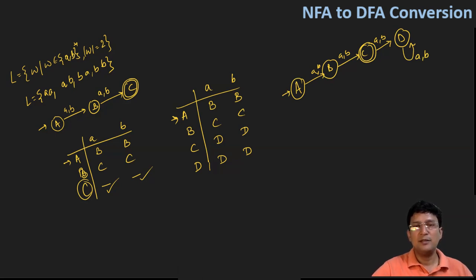You will remain at state A. With a one length string, you will move to a state number B, which is also non final state. So this will ensure that only two length string is accepted.